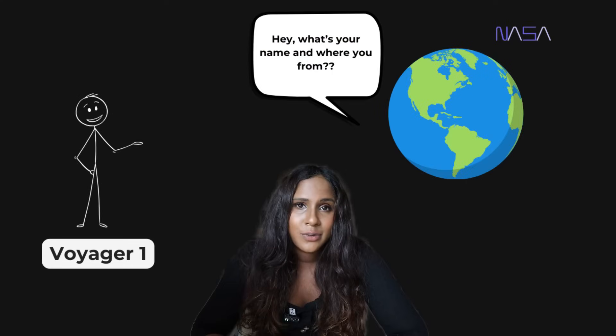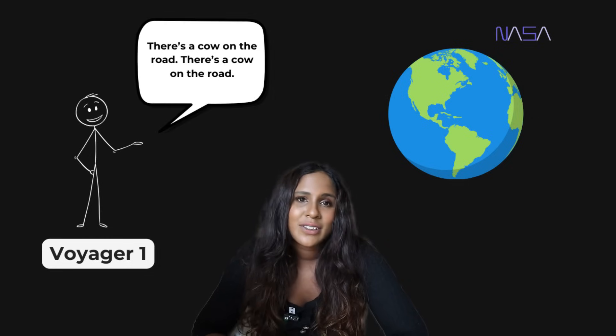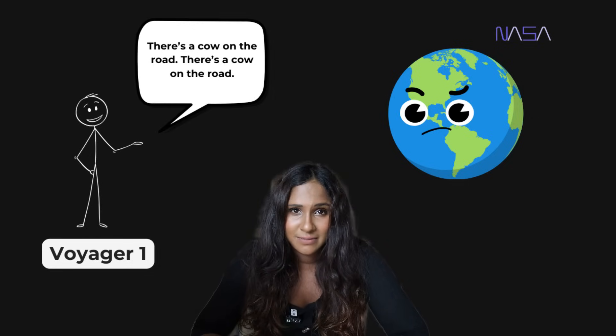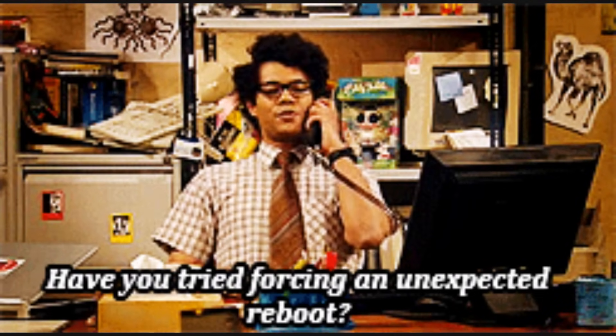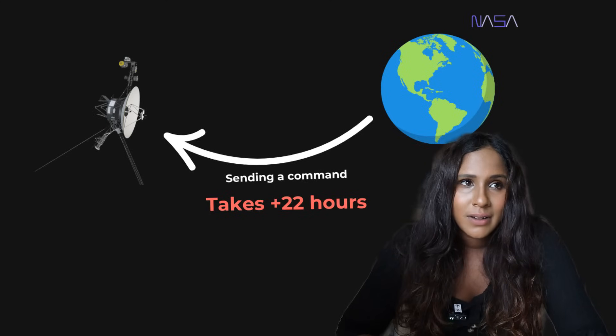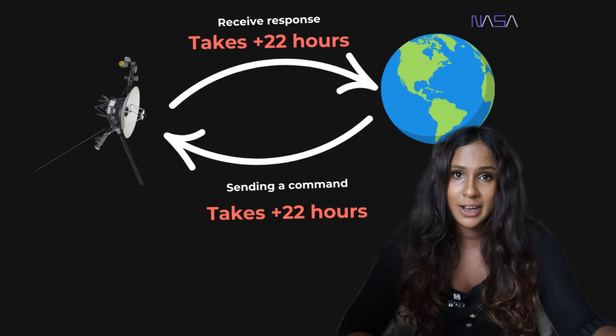In fact, if Voyager 1 was a person, this would be like NASA asking the person questions, and then the person responding with the same response over and over again. So at first, NASA engineers tried what any software engineer would try first. They did a simple restart, hoping that if they reboot the flight data system, it would bring back everything to normal. But then after sending that command and waiting nearly two days for a response to travel from Voyager and back to Earth, the problem actually didn't go away.